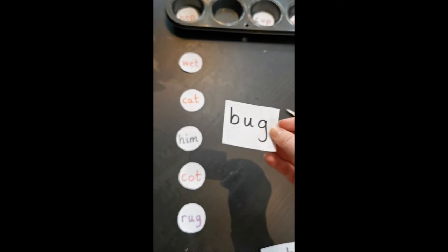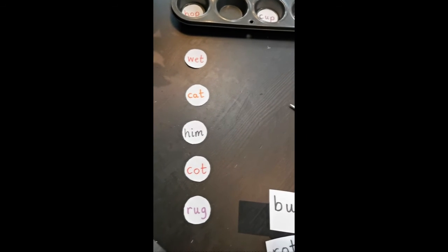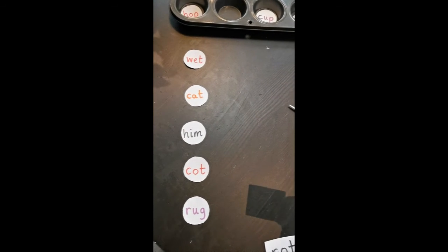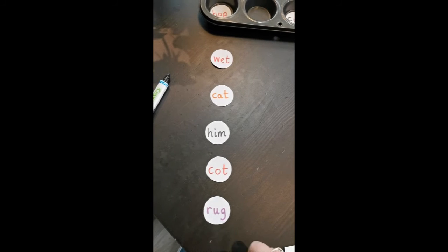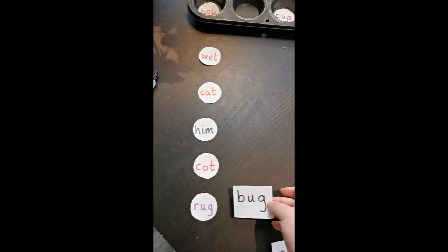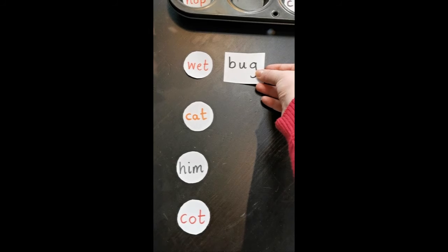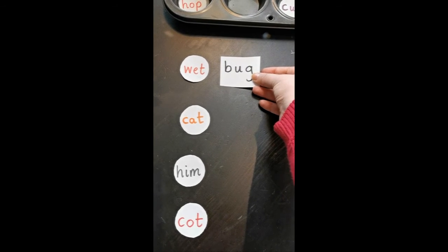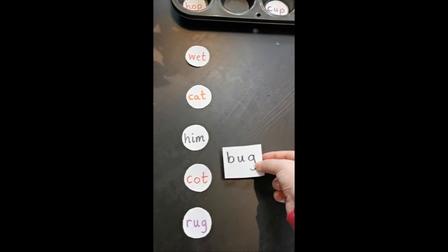Then you take one of the words that you came up with together - bug. Can you find the rhyming word? Depending on how confident they are, they might just say 'oh yeah, it's rug' and point to it. If not, go one at a time: wet and bug, do they rhyme? No. Then go until you find the one that it actually does rhyme with.